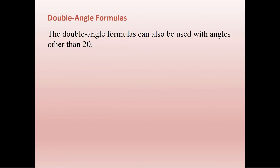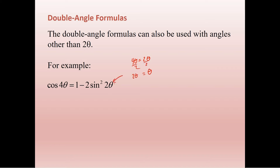Double angle formulas can also be used with angles other than 2 theta. For example, what about cosine of 4 theta? We know 4 theta equals 2 times 2 theta, so the theta in our identity becomes 2 theta. Similarly, if A equals 2 theta, then theta equals A over 2. This doesn't happen a lot, but we need to be aware of it — it particularly comes into play with power reducing formulas.